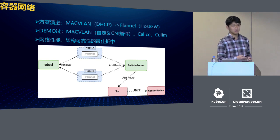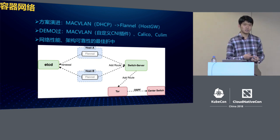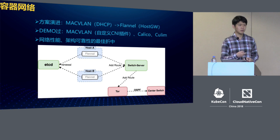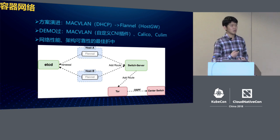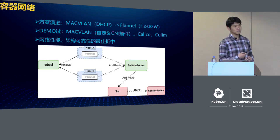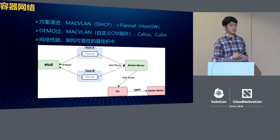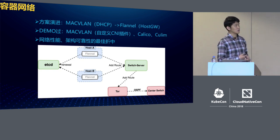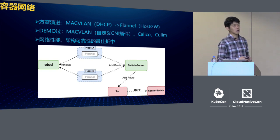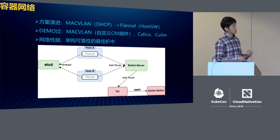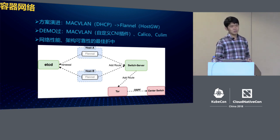The second issue was that when we created a container, we needed real-time allocation of IP. This meant that if we relied on the DHCP central architecture and it had any problem, then the whole container system would result in a big problem.